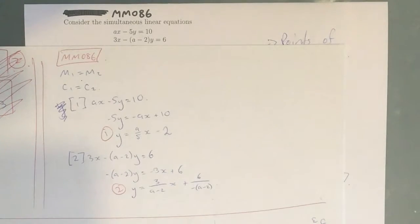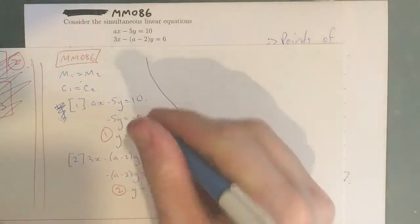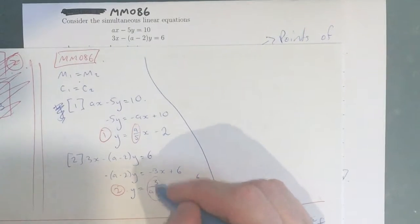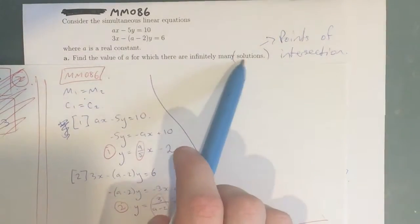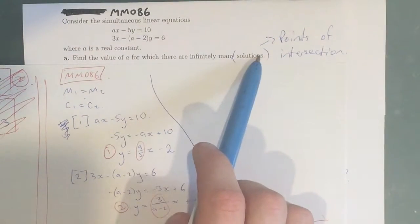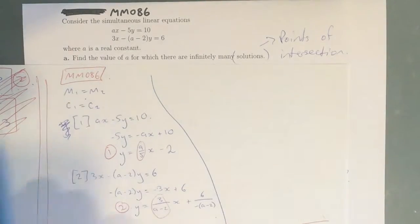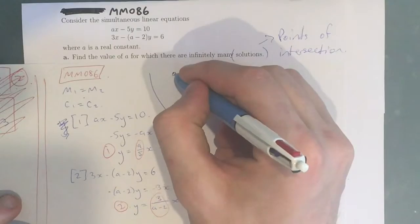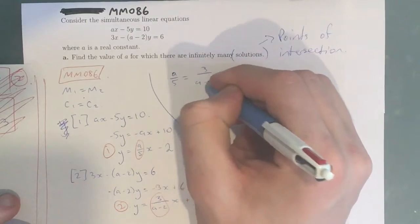What we want to do from here is equate our gradients. This is our first gradient, and this is our second gradient. We know that if they have infinitely many solutions, they have to be the same graph, which means they have to have the same gradient. So we simply equate these gradients: A/5 equals 3/(A minus 2).